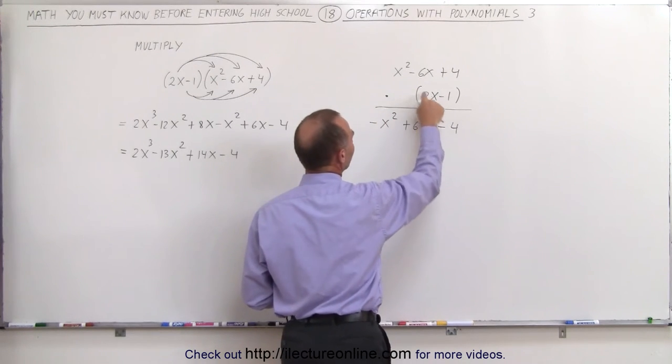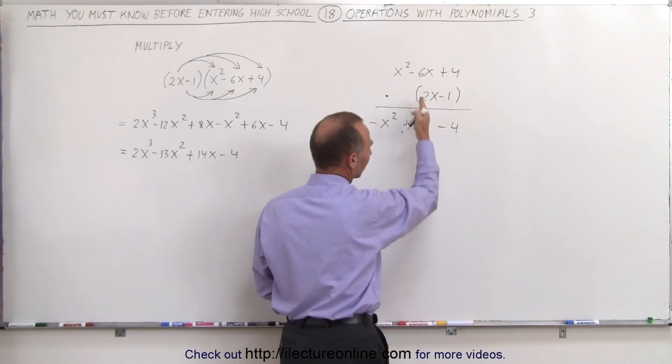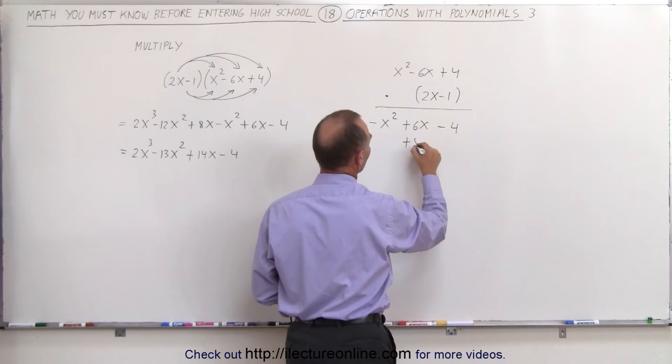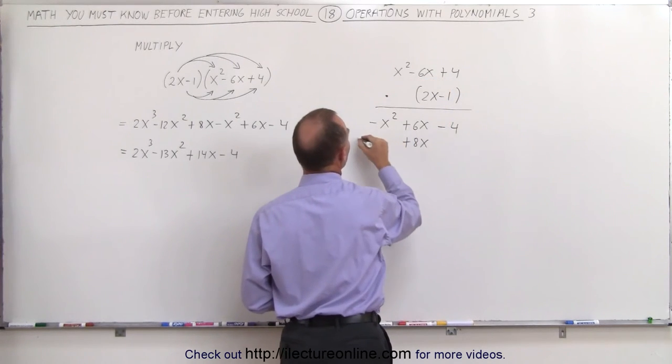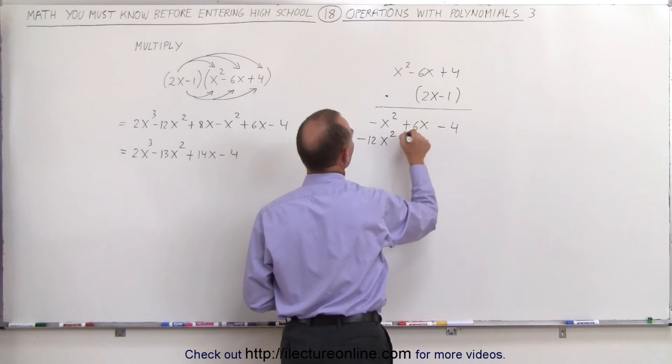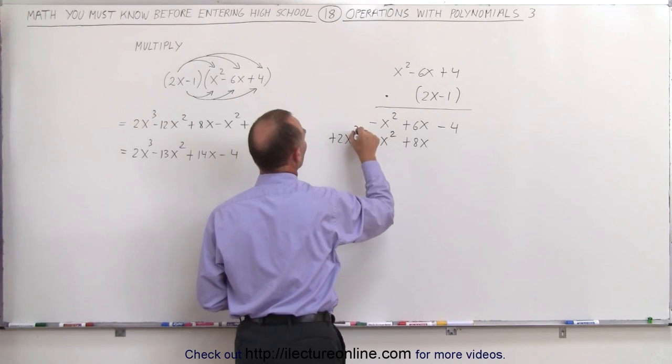Now we multiply the 2x times every term up here. 2x times 4 is 8x, and we'll put them in the same column as the 6x. So plus 8x. 2x times minus 6x is minus 12x squared. And 2x times x squared is plus 2x cubed.